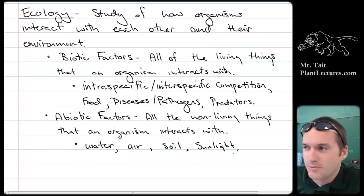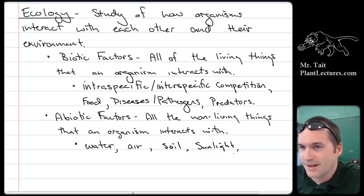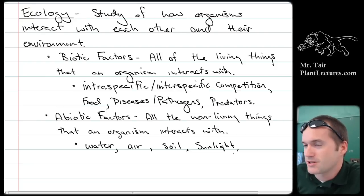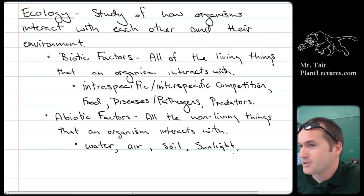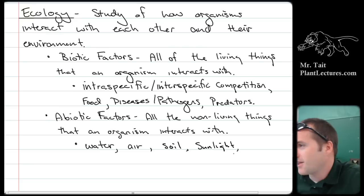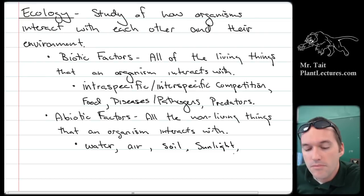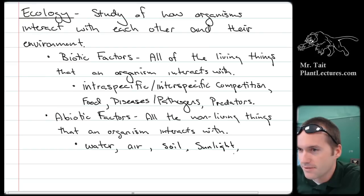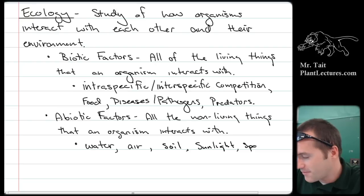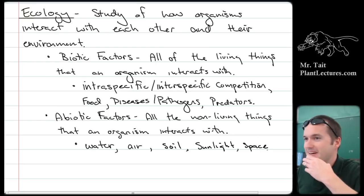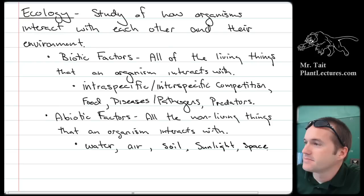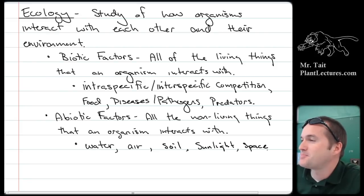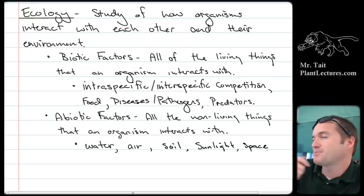If you didn't have sunlight, you wouldn't have life. The second law of thermodynamics says that any transfer of energy results in some loss of energy as heat, so without a constant input of energy, everything would become less and less complex. One more abiotic factor: space — physical space between organisms.